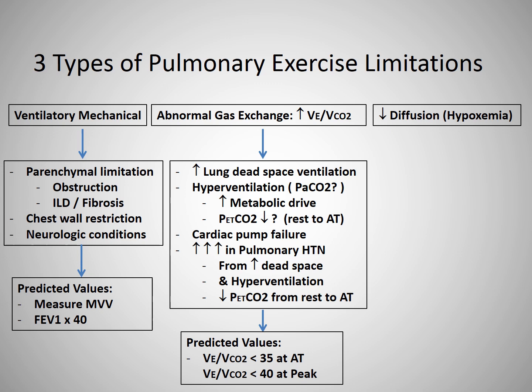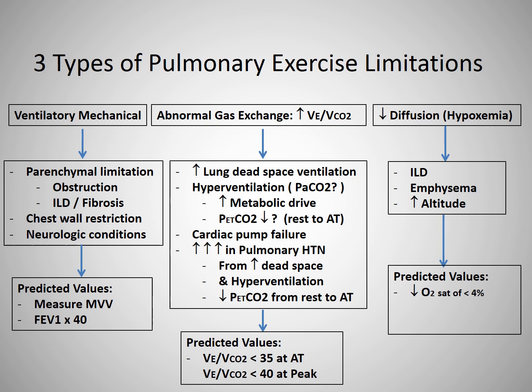To complete our analysis of the third type of pulmonary limitation — diffusion abnormalities — the etiologies can be varied. Interstitial lung disease causes hypoxemia by thickening of the alveolar capillary membrane, slowing the rate of transfer of oxygen into the red blood cell. Emphysema, on the other hand, causes impairment by destruction and loss of the actual alveolar capillary membrane — if there is no surface area present, there is nothing for oxygen to diffuse across. At high altitudes, because the rate of diffusion is dependent on the partial pressures of O2 in the atmosphere, if the PaO2 is much lower, the driving pressure for diffusion is also going to be much lower, slowing the rate of O2 uptake. Regarding predicted values, an O2 saturation decline is usually not considered significant unless it falls by at least 4%, and it would need to fall below 90% to be considered a limiting factor during exertion.